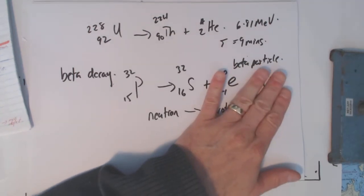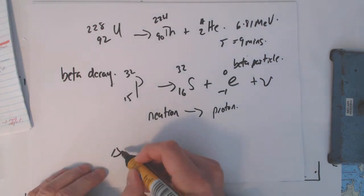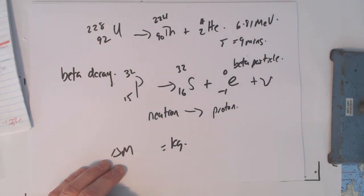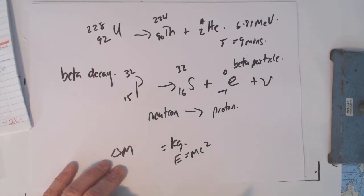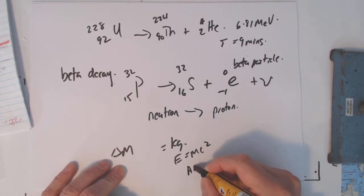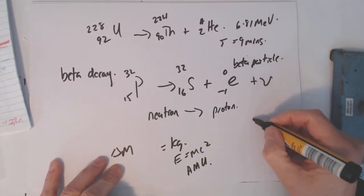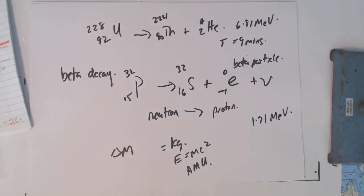Anyway, this equation here, we would get a mass deficit with this equation. We've got energy being released. Now, that mass, that delta M, we could have that as kilograms, but that kilograms we could convert into joules through E equals MC squared, or we could have that in atomic mass units. And it comes out for this reaction at about 1.71 mega electron volts. Quite a small amount, beta particle, and it's mainly the EK, or the kinetic energy, of the beta particle.